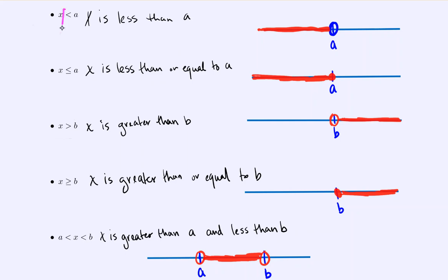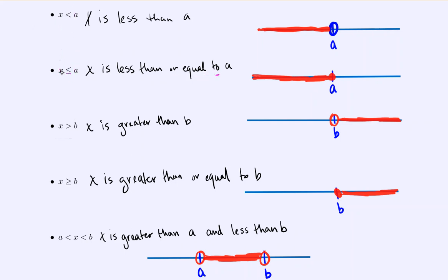To differentiate between the two symbol pairs, they point in the same direction, but the second one has an extra line underneath that adds the phrase 'or equal to.' So this would be x is less than or equal to a. Similarly, here x is greater than or equal to b.